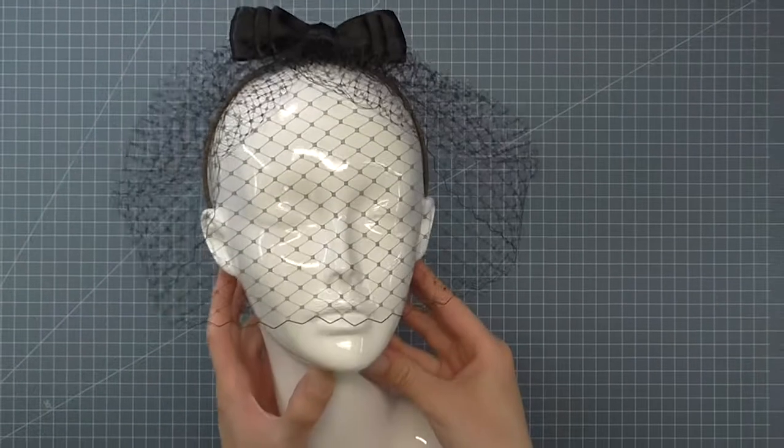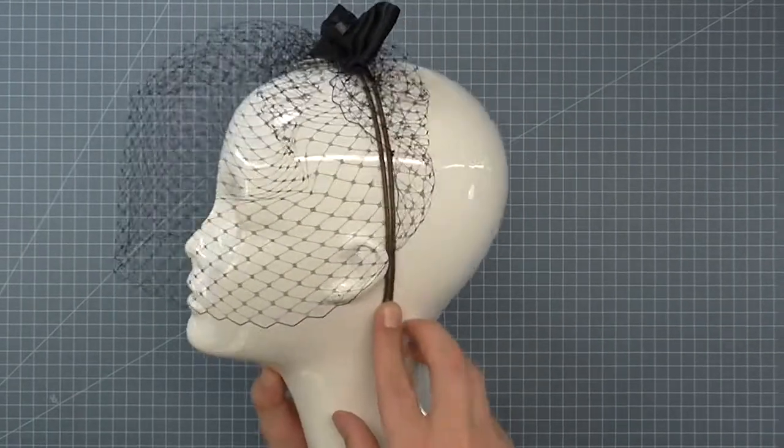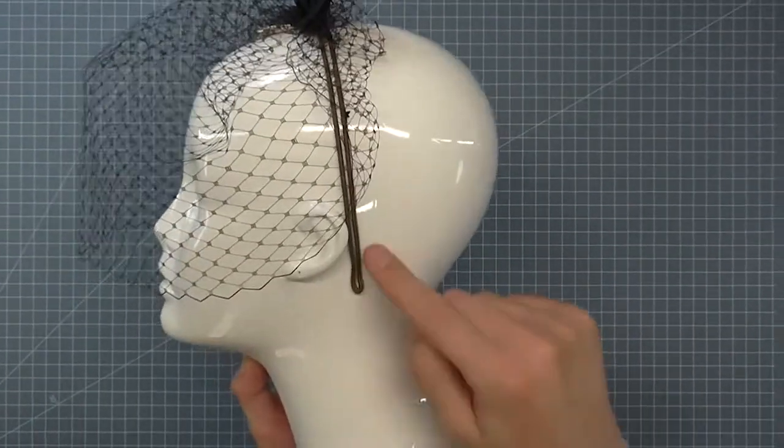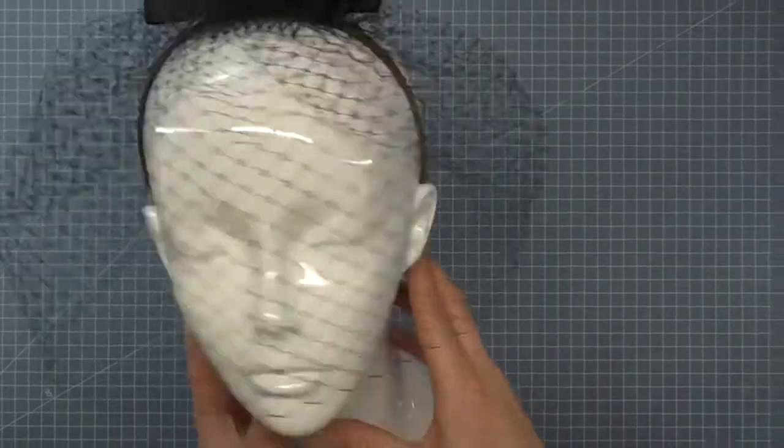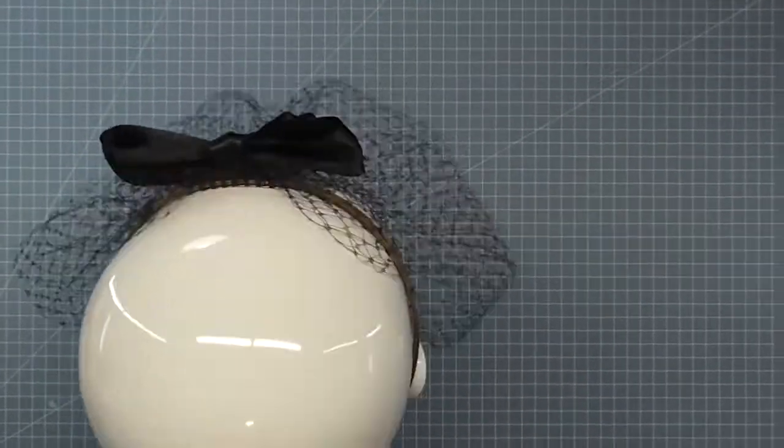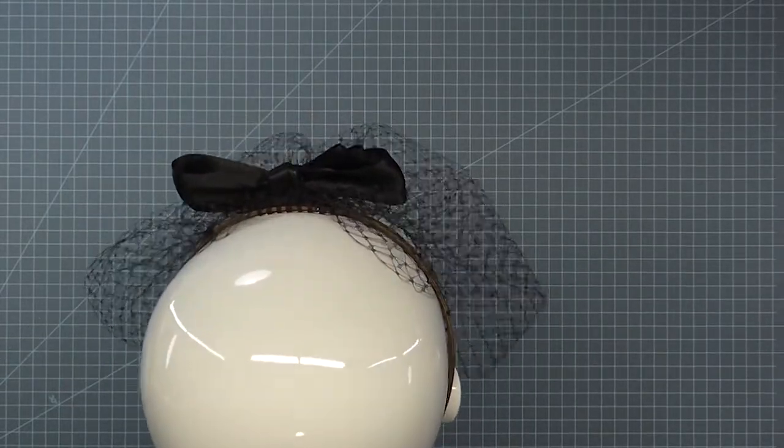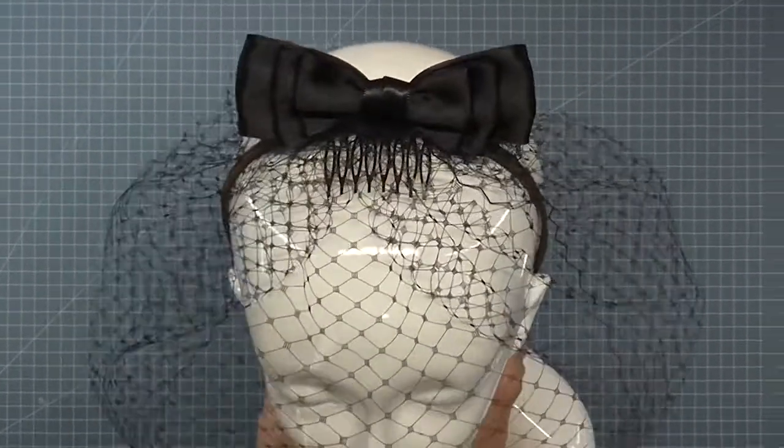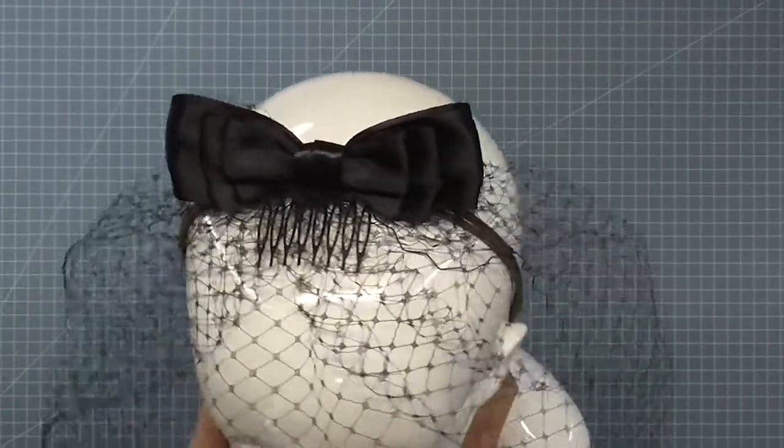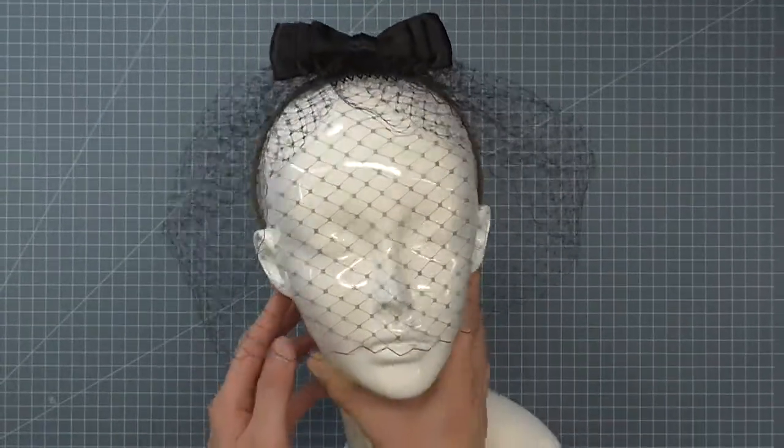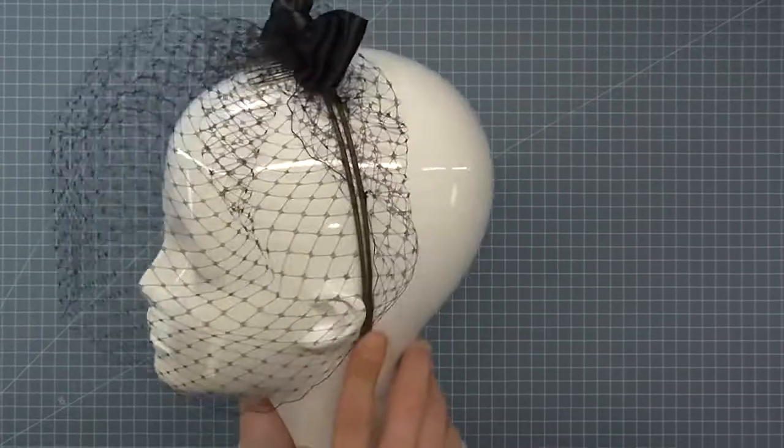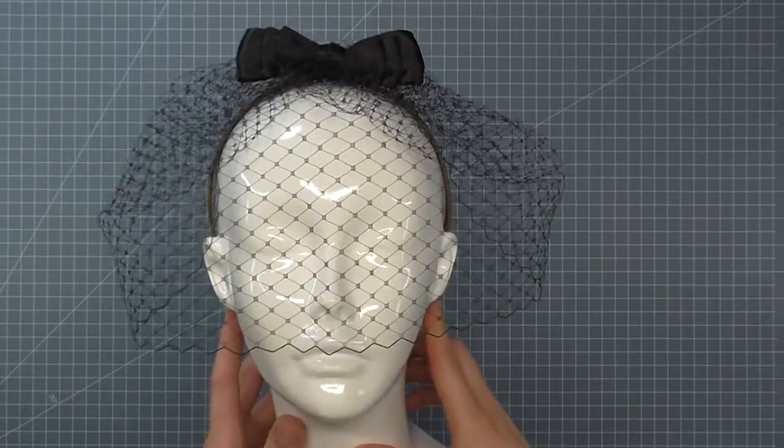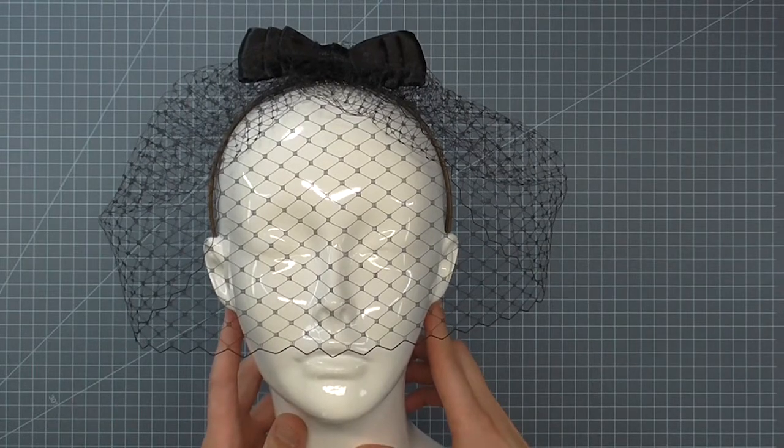In this video, I'll show you how I make a custom headband that can be used on its own or to support another hat. In this example, I've made a very simple headband with a comb that faces to the front to catch it from falling forward. I'm just going to show you how to do the headband itself. I'm not going to do the veiling or the bow.